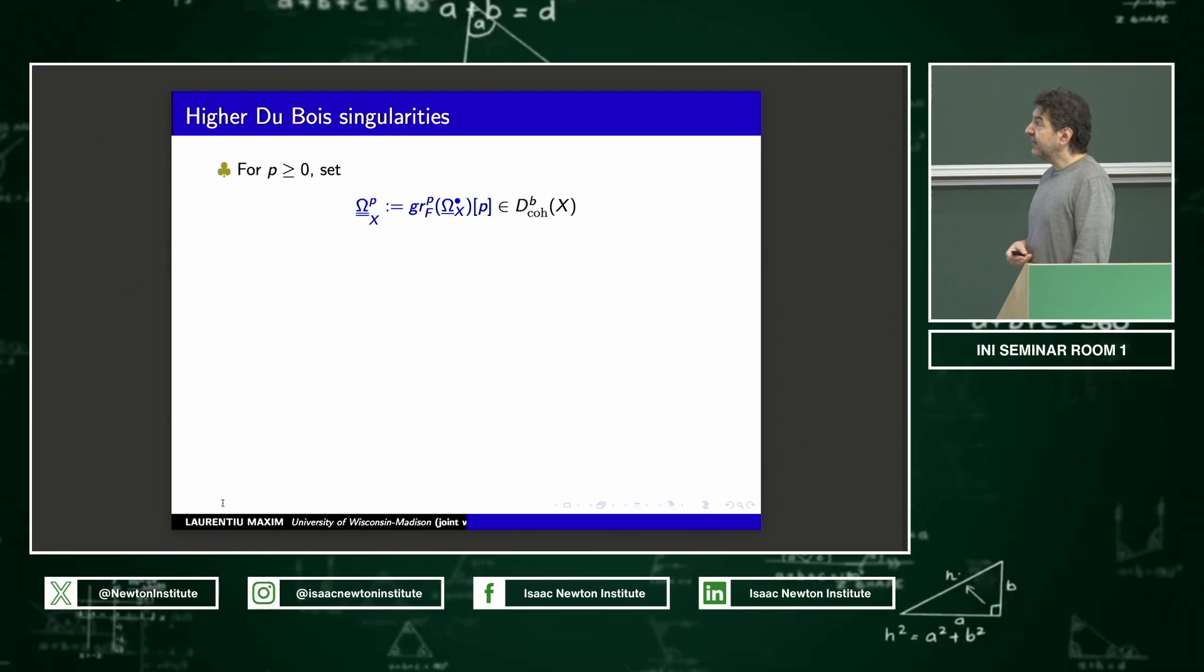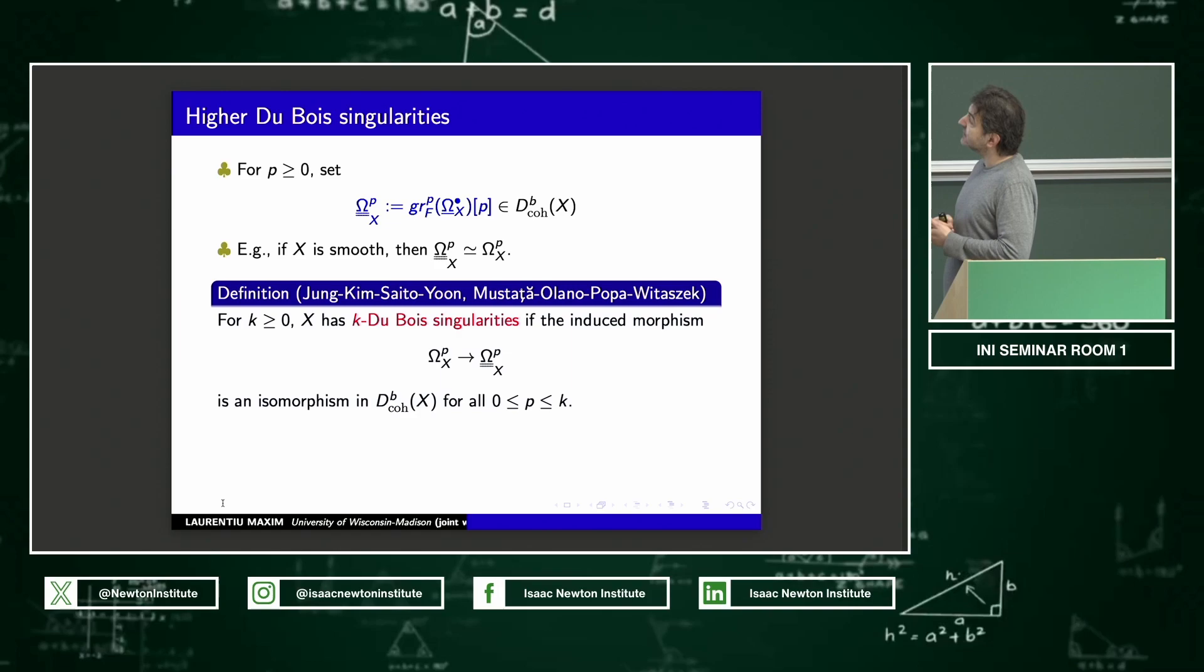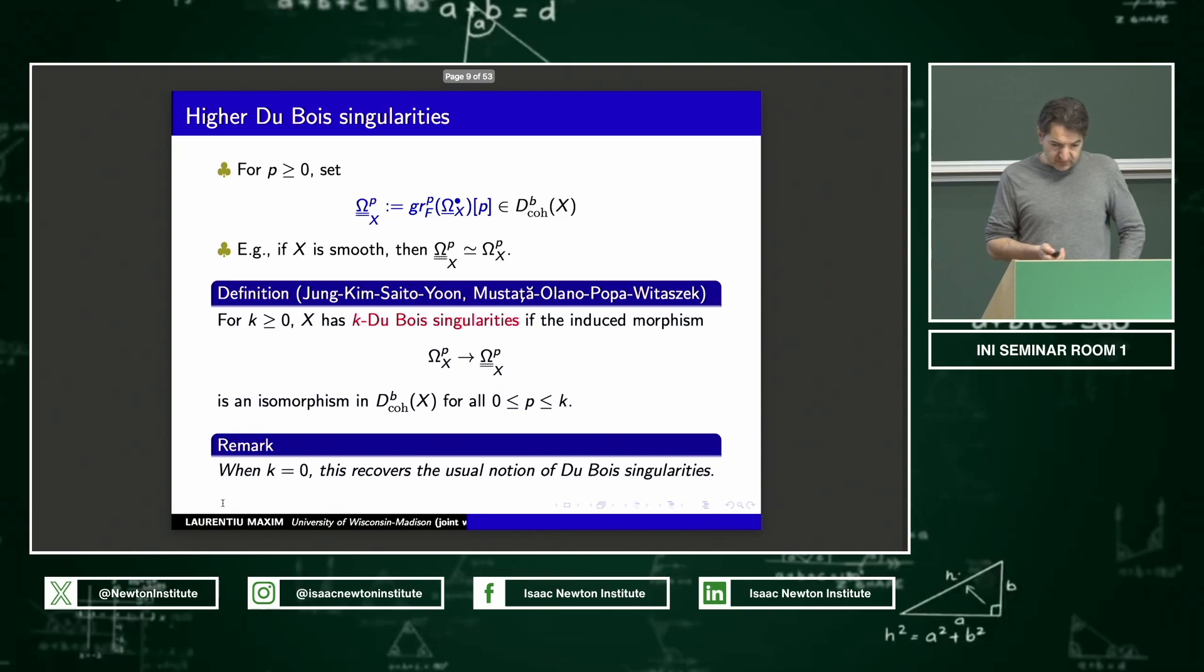I'm going to do what you usually do with the Deligne complex with a stupid filtration. Holomorphic forms are the graded pieces of the Deligne complex. So I'm going to do the same here with the Du Bois complex. I'm going to take these graded pieces and put them in the right spot after shifting. I have to warn you, these are complexes. They're not sheaves. So there are complexes, coherent cohomologies. They are obtained by the derived push forward from simplicial resolution. In the smooth case, of course, as I said, the graded pieces are just the usual forms. And what do we do with these two definitions?